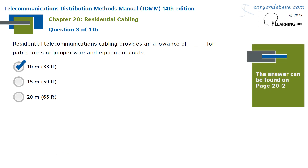Residential Telecommunications Cabling provides an allowance of 10 meters, or 33 feet, for patch cords or jumper wire, and equipment cords.